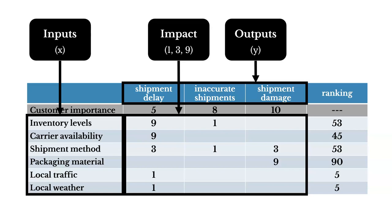Let's take a look at one example. For inventory levels, we know those are a key contributor to shipment delays — a lot of our shipments are delayed because we don't have enough inventory on hand at a given time, so we give that a score of 9. Now for local traffic and local weather, those could impact shipment delays, but it doesn't happen that often and the impact is low, so we give that a score of 1. We take a look at each input and output combination to see if there's a relationship, and if there is, we assess an impact score of 1, 3, or 9.